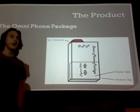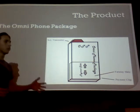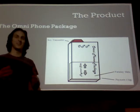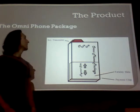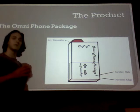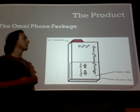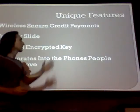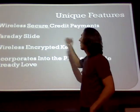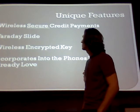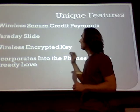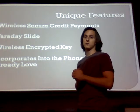Hi, my name is Keith Heiner. Like Wyatt said, we came up with a list of features that are going to meet the needs of the customers that we're going to have. We're going to put all these features into one small package that's going to fit into any normal-sized smartphone. Some of the key features in our OmniPhone are going to be wireless security and a credit payment feature to ensure that your credit card information embedded in the OmniPhone is secure. The Faraday slide is going to ensure that security.